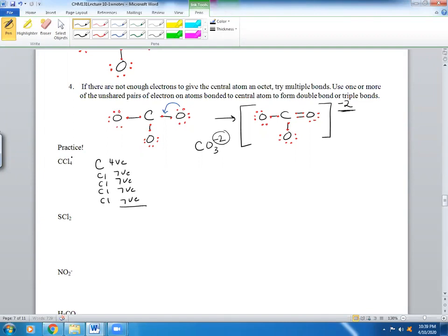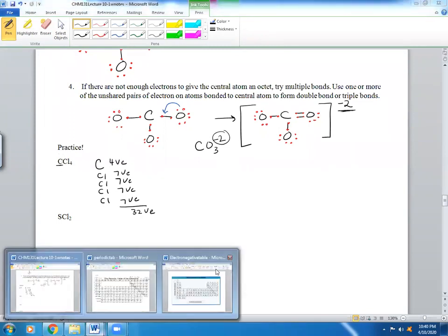Do I have any charge? No, so I don't need to worry about that. So add them up. You have 7 plus 7 plus 7 plus 7 is 28 plus 4 is 32. Which atom do you think is central? C, it's less electronegative and it's written first.